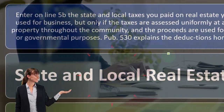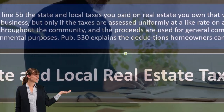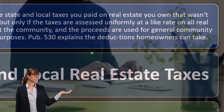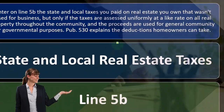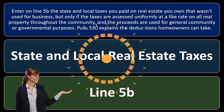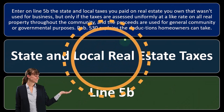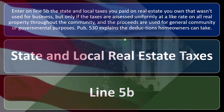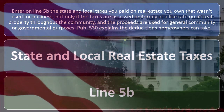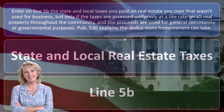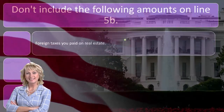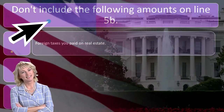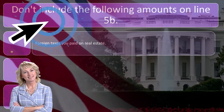The deduction applies only if the taxes are assessed uniformly at a like rate on all real property throughout the community and the proceeds are used for general community or government purposes. Publication 530 explains the deductions homeowners can take. So don't include the following amounts on line 5B.